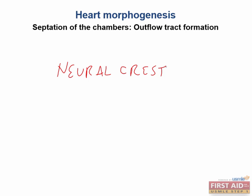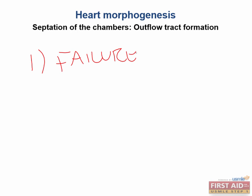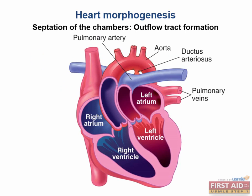There are a few things that can go wrong when we are forming the great vessels. Number one, we're talking about the failure of the septum to properly rotate — not to properly form, but to properly rotate in its descent. This failure to properly rotate will lead to transposition of the great vessels. So the aorta will be connected incorrectly with the right ventricle, and the left ventricle will be incorrectly connected with the pulmonary trunk.